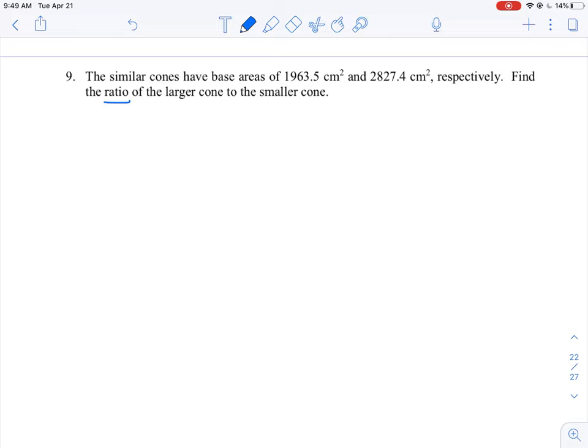So in this question, we're looking at a ratio of a larger cone to a smaller cone. This is implying that we're looking at volume. And not only comparing the ratio of volumes, but we have to do it in such a way where we're not actually given the dimensions of the cone, because the problem is giving us area of two separate cones here.